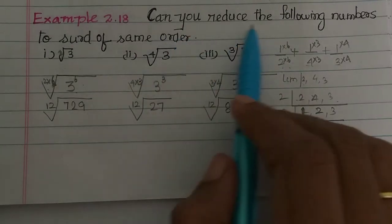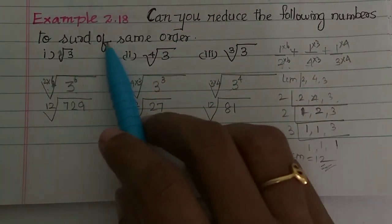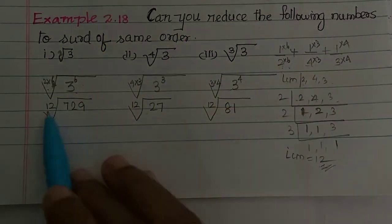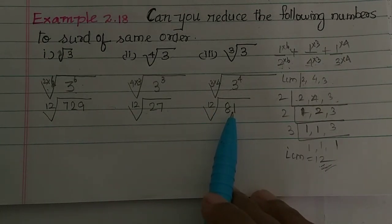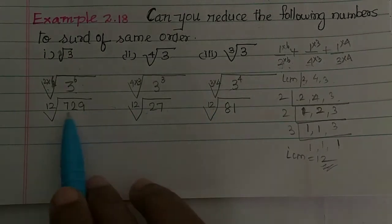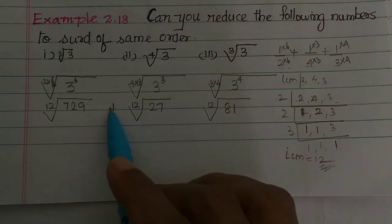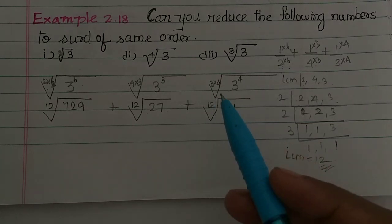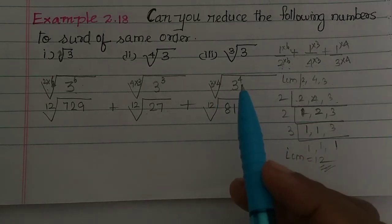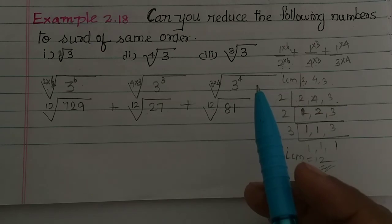Can you reduce the following numbers to surds of the same order? So this is what they said. So same order we can add and subtract. That's all.